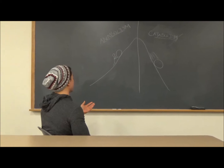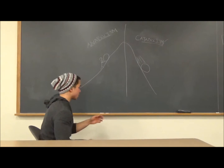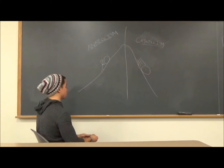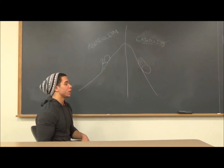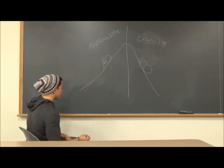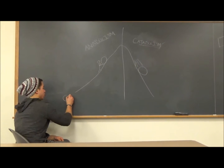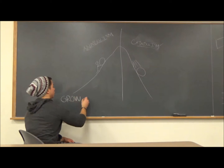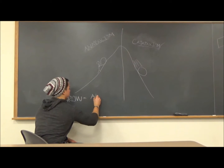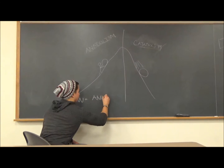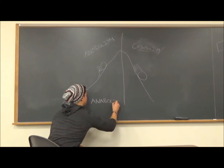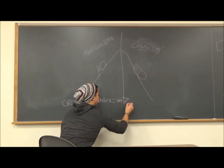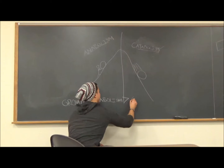Anabolism requires energy. Anabolism is what drives protein synthesis, which is what builds muscle. So at the end of the day, in order to build muscle and grow, anabolism must be greater than catabolism.